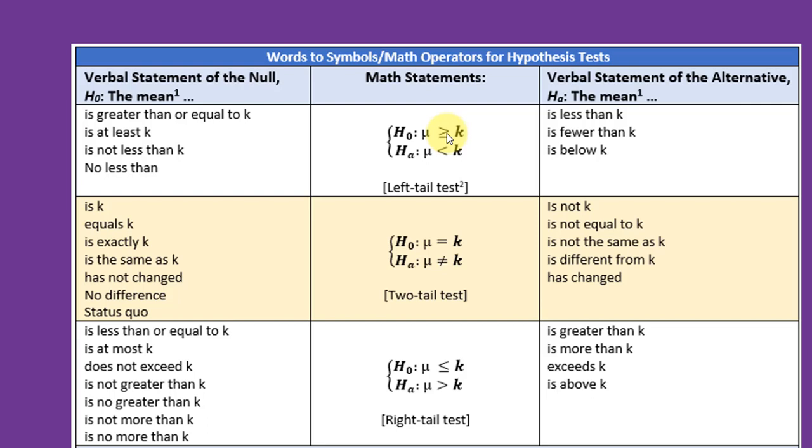Remember that the null always has a form of equality in it: the greater than or equal, the equal, or the less than or equal. The alternative always has to be the complement. The complement of the greater than or equal is the less than. The complement of equal is not equal. The complement of less than equal is greater than or equal.